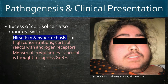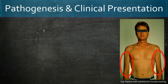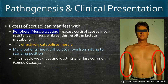Menstrual irregularities also occur due to cortisol suppressing GnRH. Peripheral muscle wasting is also a feature of excess cortisol, occurring due to insulin resistance caused by cortisol which promotes lactate metabolism, effectively catabolising muscle. As a result, many patients find it difficult to move from sitting to a standing position. This sign is far less common in pseudo-Cushing's, so its presence helps to outweigh this differential.